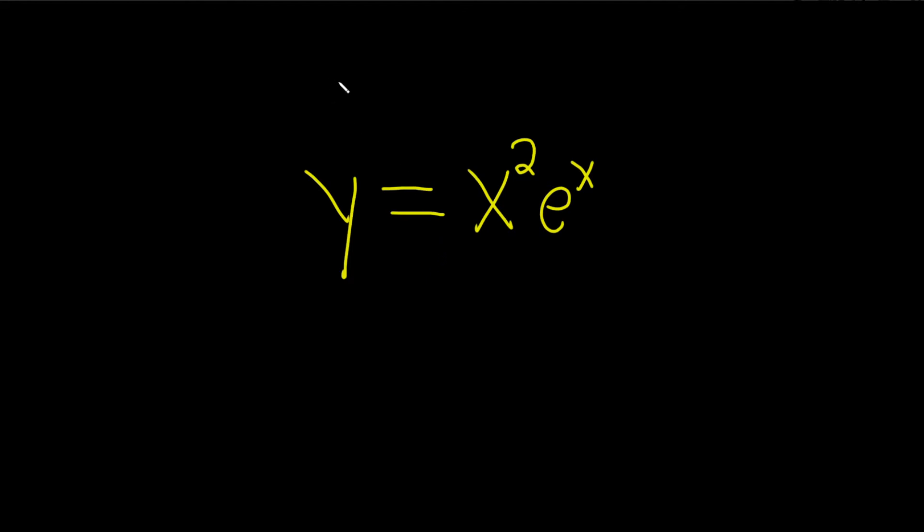We're going to use something called the product rule, because we have a product. You have a function f times a function g, and you take the derivative.